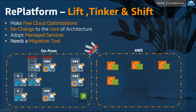The next migration strategy is called re-platform — sometimes referred to as lift, tinker, then shift. Tinker means you are expected to make slight modifications without affecting or changing the core of the architecture; you are just changing the platform through which the application runs. A typical example of re-platform is when you decide to migrate to a managed service on AWS. As shown in our example, we re-platformed a database server on-premises to an Amazon RDS instance, instead of re-hosting it as a traditional EC2.